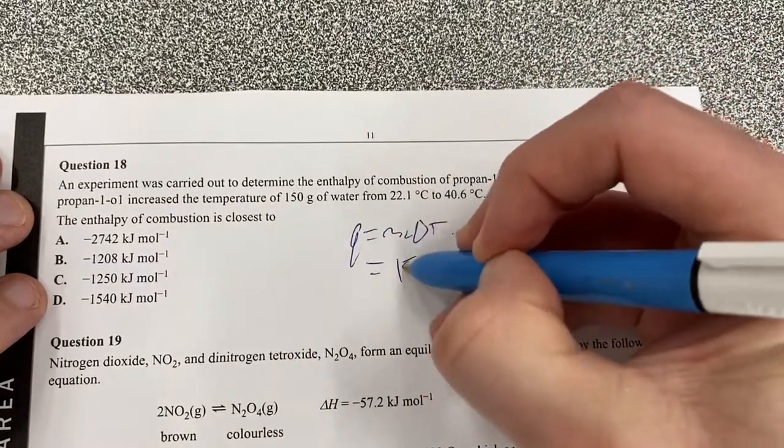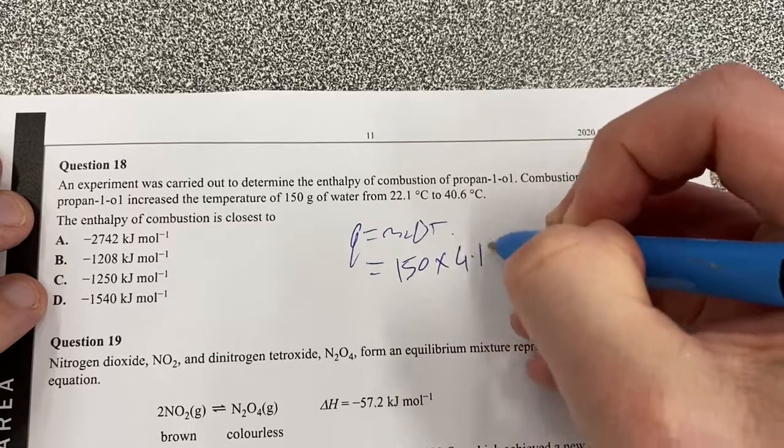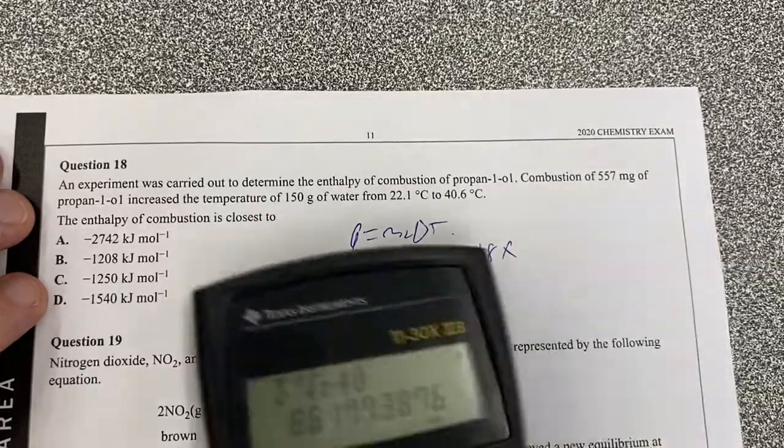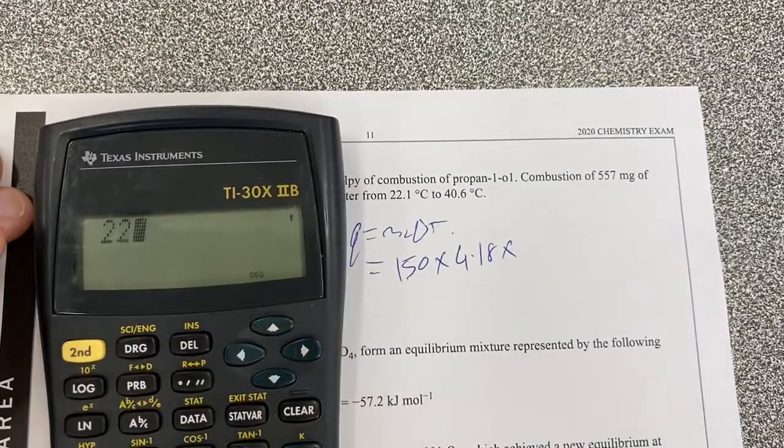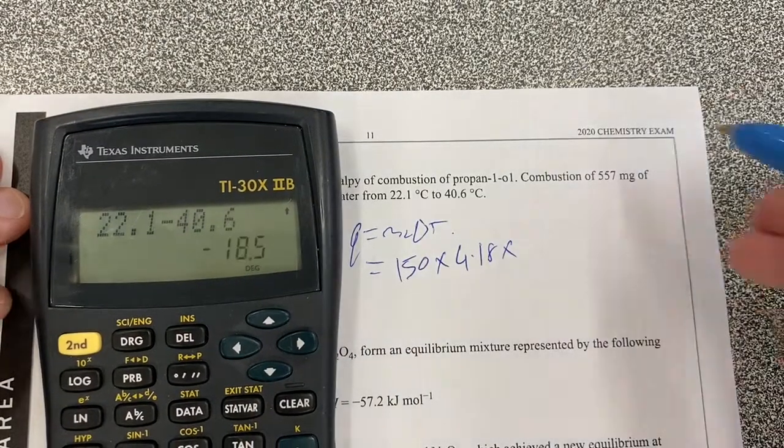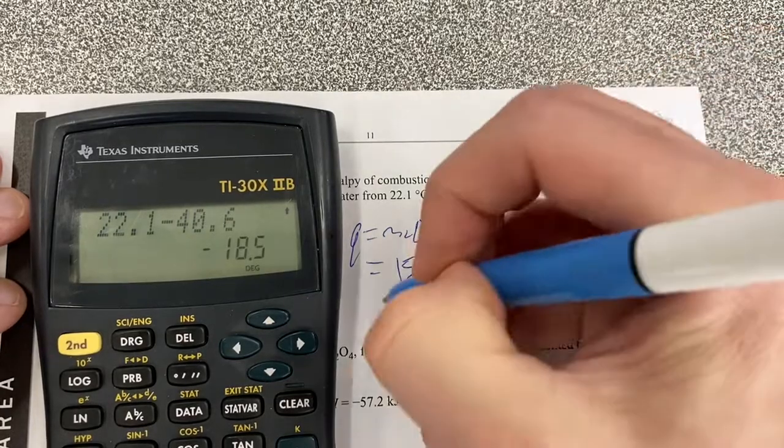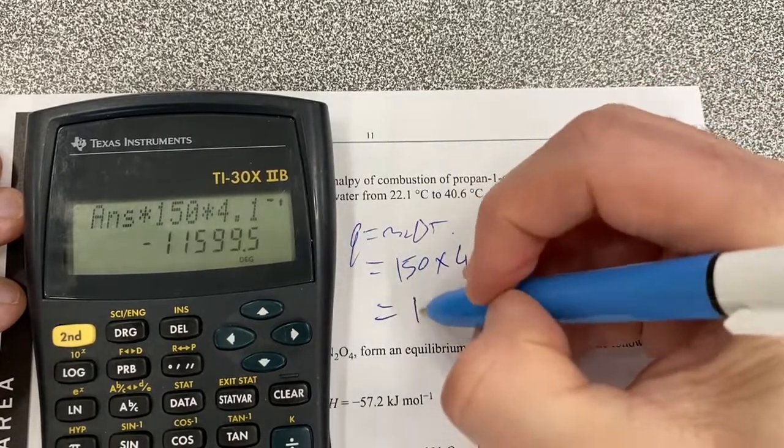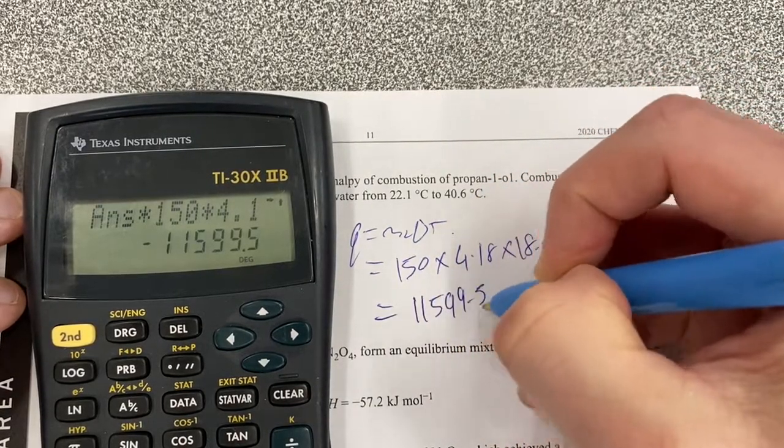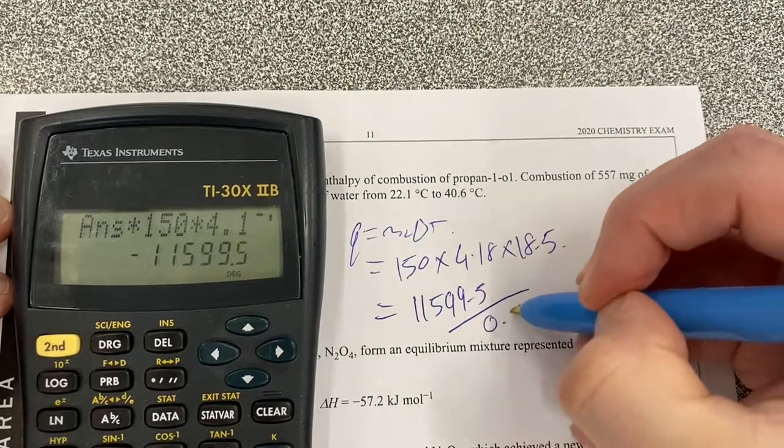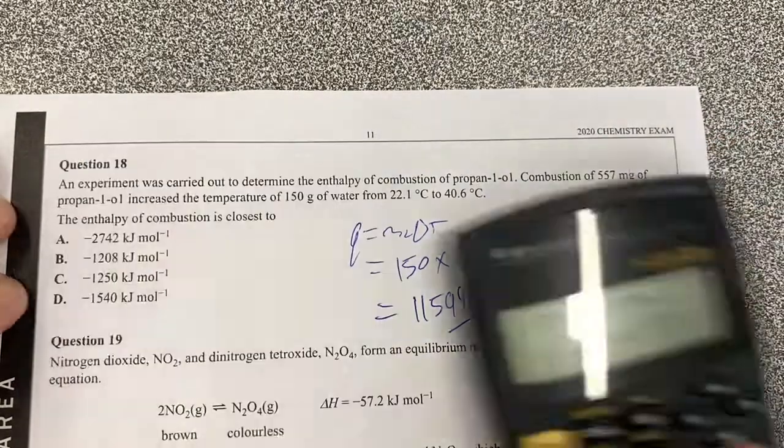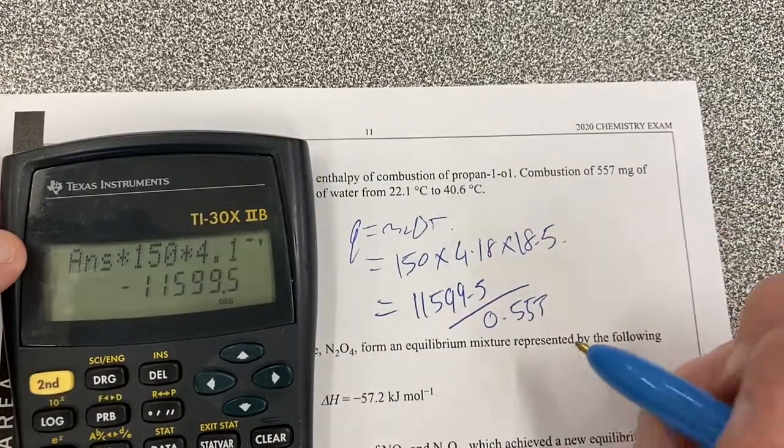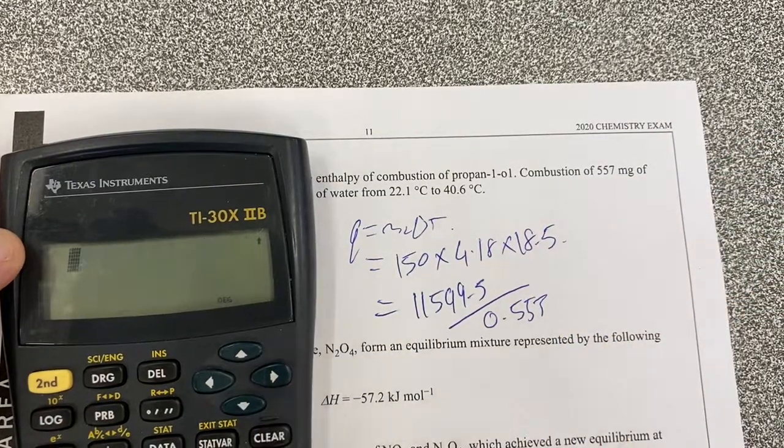Our mass is going to be 150, our C is going to be 4.18. Our temperature change is going to be 22.1, take away 40.6 is 18.5. I'll multiply that by 150, multiply that by 4.18, gives me 11599.5. I'm going to divide that by 0.557, because I need to get the moles of that, don't I? So therefore, I'll find that.